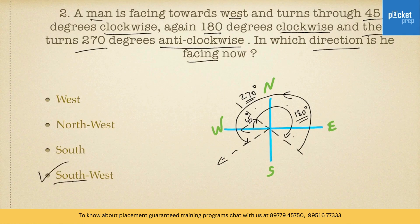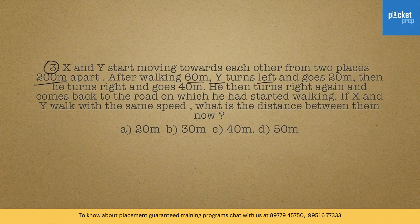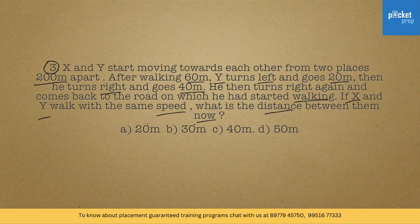The answer is south-west. Here is another question: X and Y started moving towards each other from two places 200 meters apart. After walking 60 meters, Y turns left and goes 20 meters, then turns right and goes 40 meters. He then turns right again and comes back to the road on which he had started walking. If X and Y walk with the same speed, what is the distance between them now? The options are 20, 30, 40, and 50.